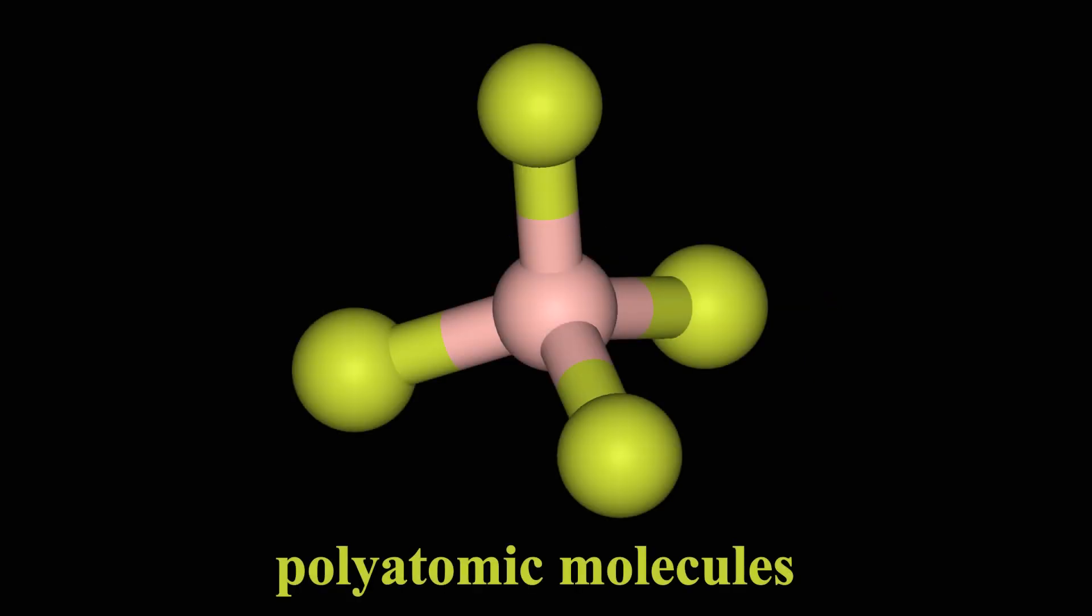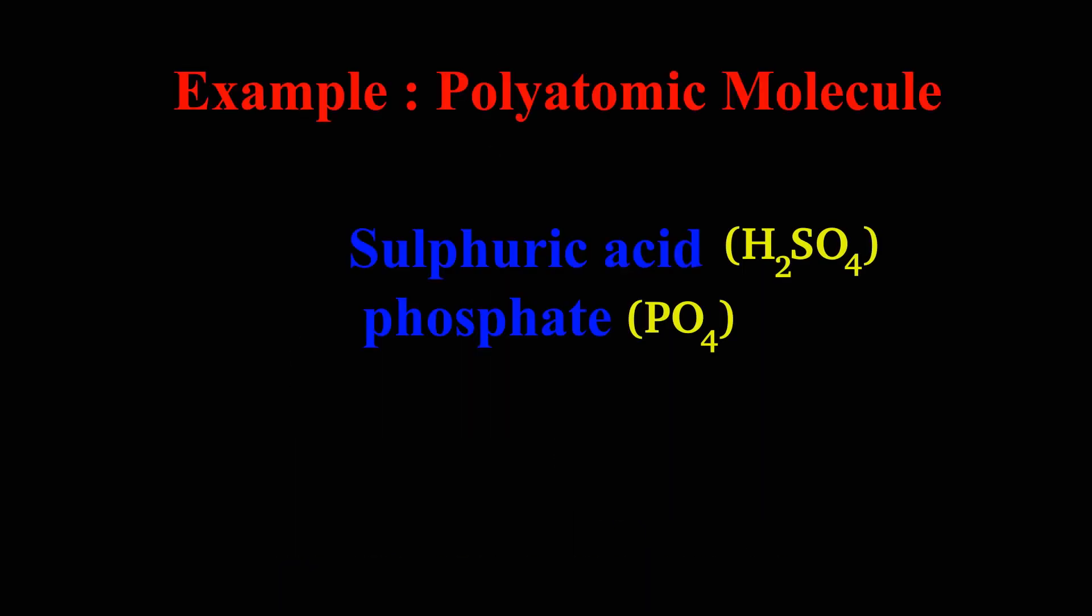Molecules with four or more atoms are called polyatomic molecules. Sulfuric acid and phosphate are examples of polyatomic molecules.